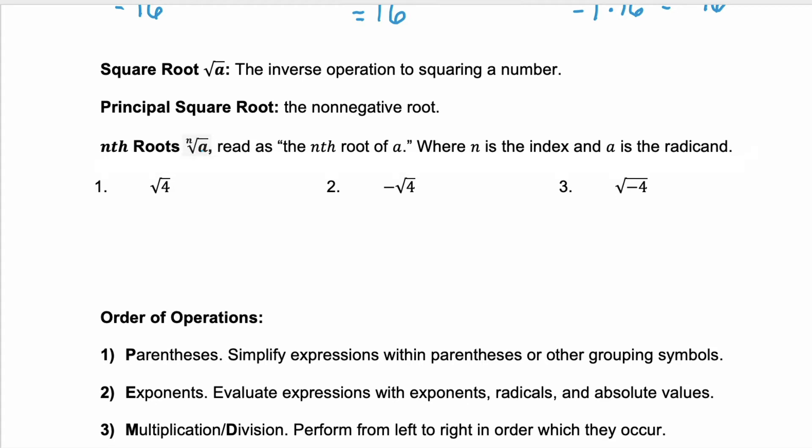An nth root is when you have this index of something other than 2. Notice that the square root above doesn't have a 2. That's implied by the square root symbol. But whenever your index is greater than 2, it would replace this n.